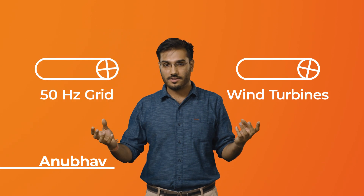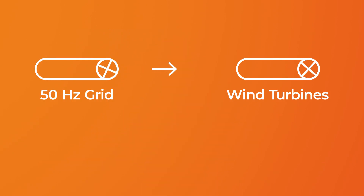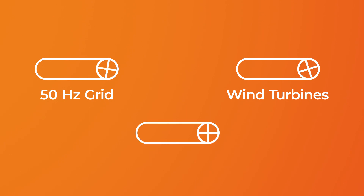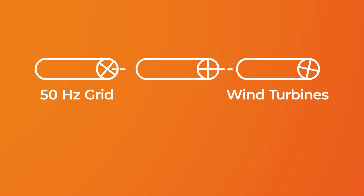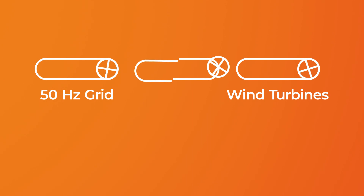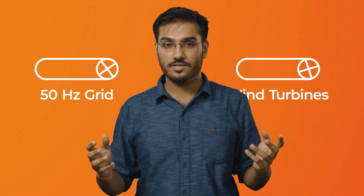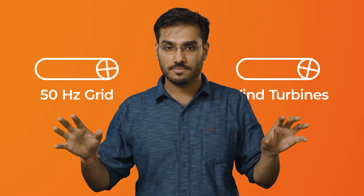How can we transport this electricity coming from wind to cities? To understand the problem, simply imagine you have two shafts rotating at different speeds. What could you do so that one drives the other without any waste of power? You could just take a third one and glue it to both sides, but this would twist the joint and ultimately things would break. So what device do you really use to connect both systems together?